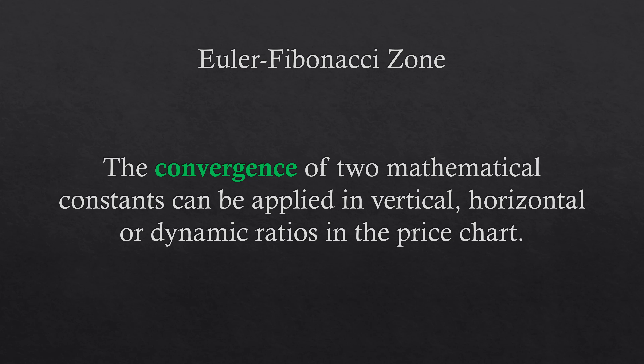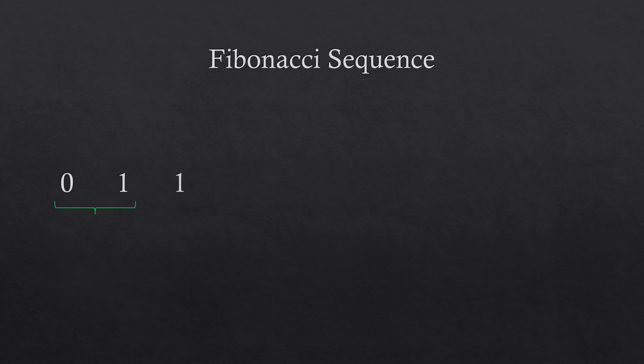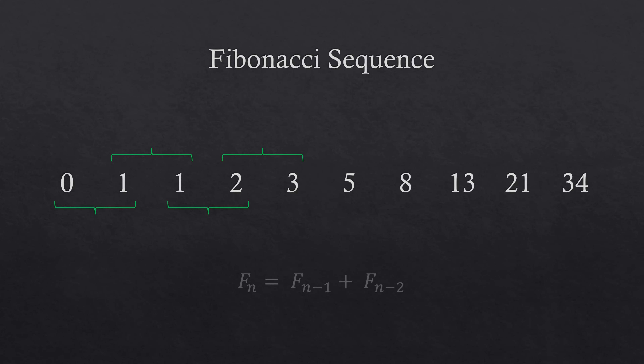Let's first quickly review where Fibonacci ratios come from, and then we'll move on to Euler's number. Fibonacci ratios come from the Fibonacci sequence, which is a series of numbers that start with 0 and 1. To know the next number in the series, you always sum the last two numbers. By knowing this rule, you can discover all the numbers in the sequence. We can express this rule mathematically: the current number in the sequence is the sum of the last two numbers.